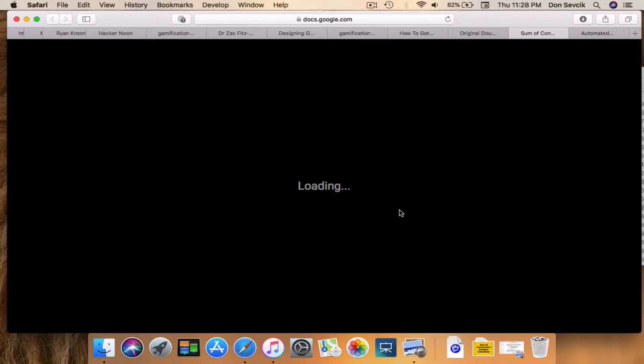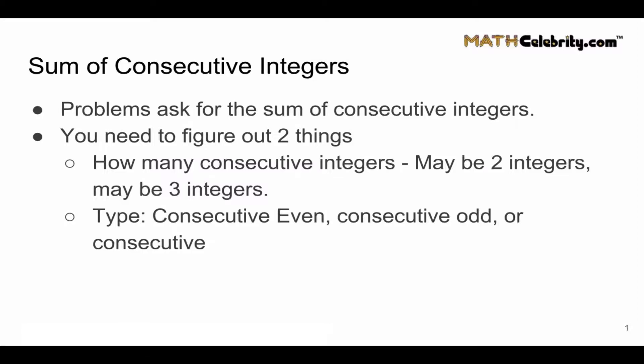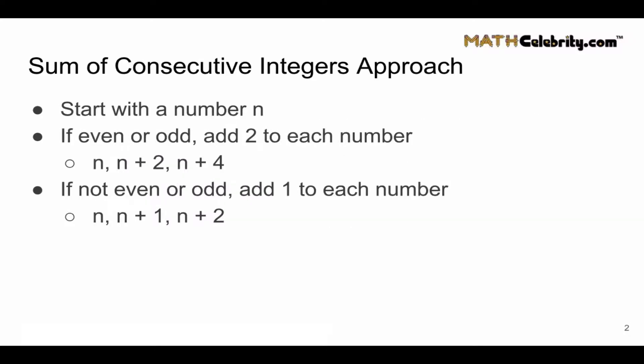Let's start with a sum of consecutive integer problem. These problems ask for the sum of consecutive integers or numbers, and you need to figure out two things: first, how many consecutive integers are they asking for — it may be two or maybe three. Second, what type of consecutive integers are they asking for? If they're simple straightforward consecutive integers, great. Sometimes they ask for consecutive even or consecutive odd, and that adds a little bit of a twist to the problem.